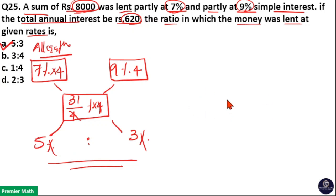If you want to do it in another method, here 8000 is the total money. And one part lent at 7 percentage and other part lent at 9 percentage. I will write it as 7 percentage plus 2 percentage. Now 7 percentage of principal 8000 is equal to, percentage and double zero cancel.